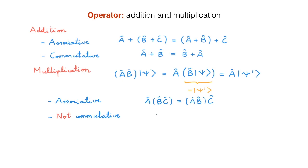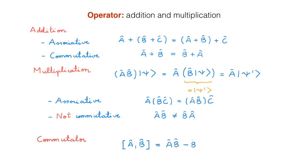One of the most important properties of operators is that under multiplication they are not commutative. In general, AB is not equal to BA. Because operators do not commute under multiplication, it becomes useful to define a new quantity called the commutator, written as square bracket A comma B square bracket, defined as AB minus BA. Commutators play a fundamental role in quantum mechanics — for example, two operators that don't commute are associated with properties that cannot be measured simultaneously. A well-known example is the position and momentum operators, which don't commute, implying you can never simultaneously measure the position and momentum of a quantum particle.